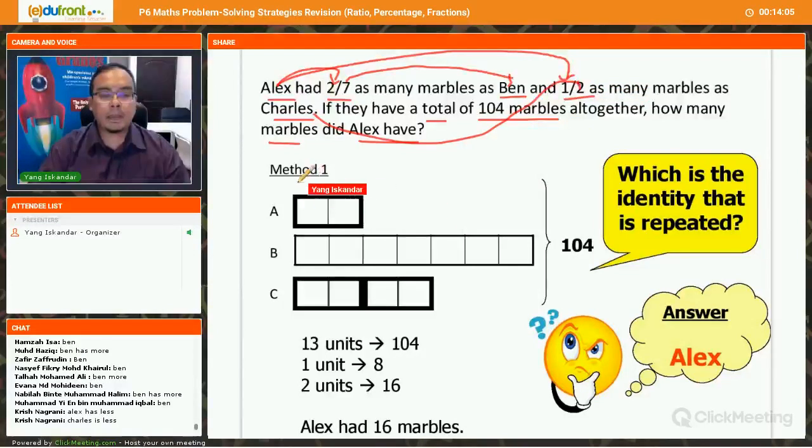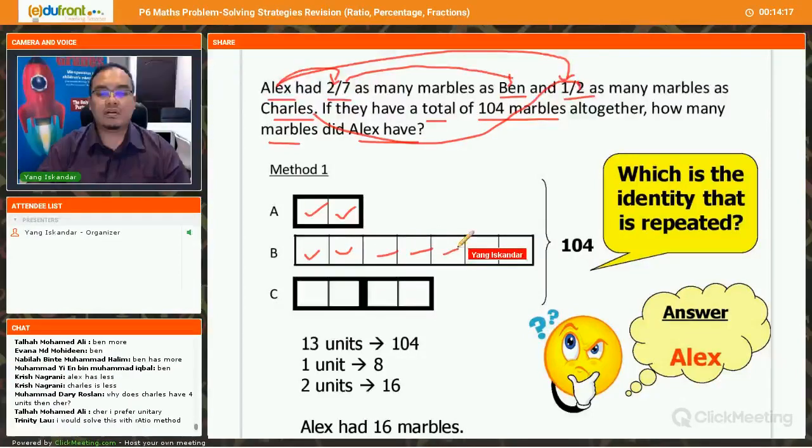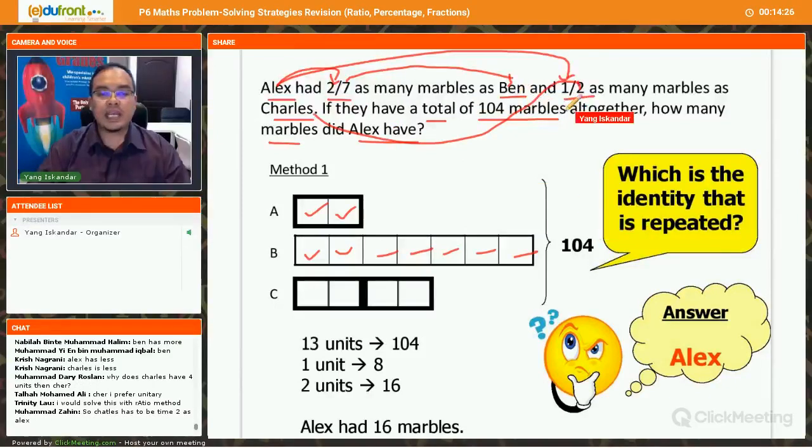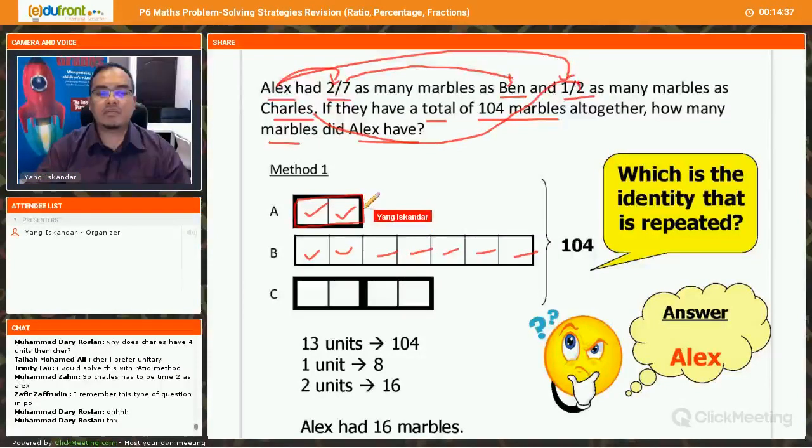So let's use the model method. Okay, so the first clue, Alex has 2 units. Okay, 1 and 2. So Ben has 7: 1, 2, 3, 4, 5, 6, 7. Okay? So I'm just drawing model based on the first clue given to me here. So the second clue given, Alex has 1/2 as many marbles as Charles. So Alex has half. So Alex originally has this, right?